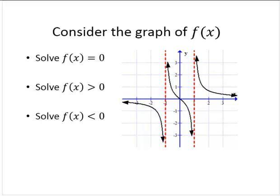So here we have what appears to be a rational function. Where is f of x equal to 0? There appears to be only one x-intercept, and that occurs at the origin. So we would just have the solution set containing 0.